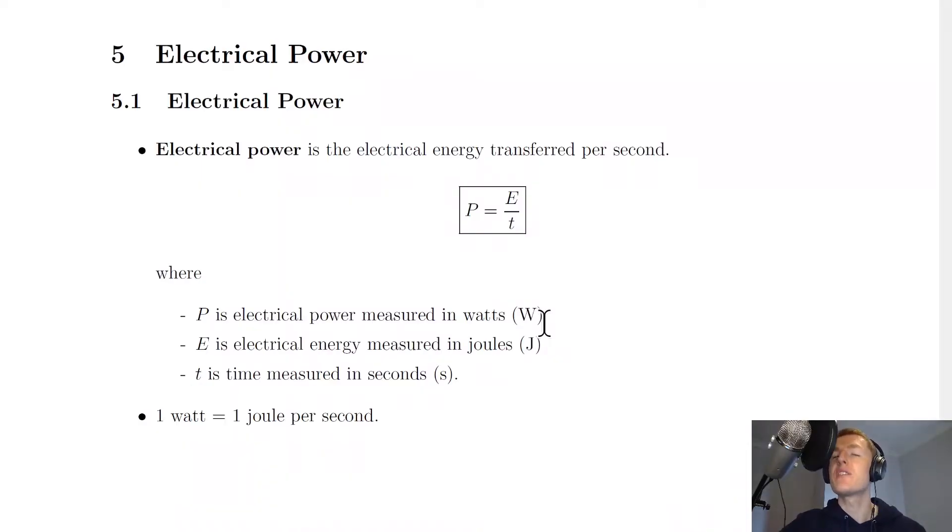The first thing we need to look at is the definition of electrical power, and it states here that electrical power is the electrical energy transferred per second, or each second. Another way of saying this though is that electrical power is the rate at which energy is transferred, and that's because the word rate refers to time. So if we look at this definition here, we're referring to an energy over a time, which gives rise to this equation here for electrical power.